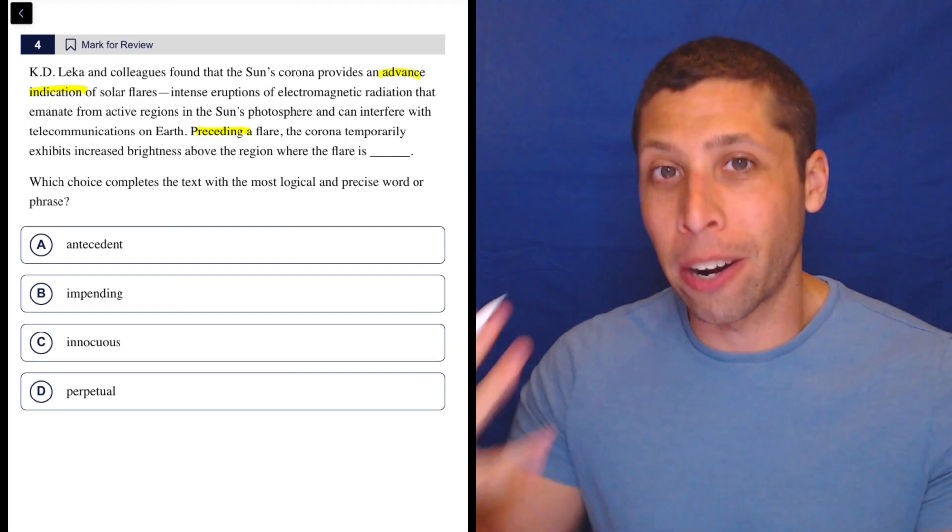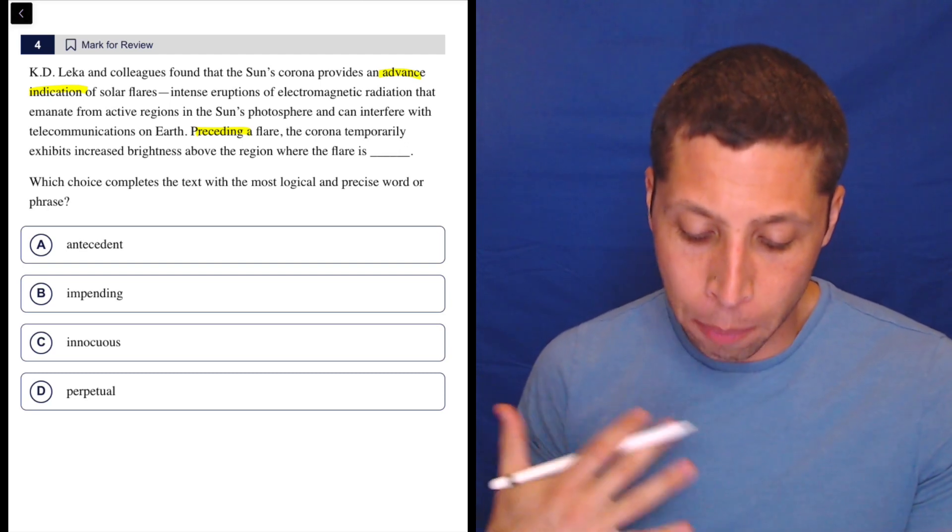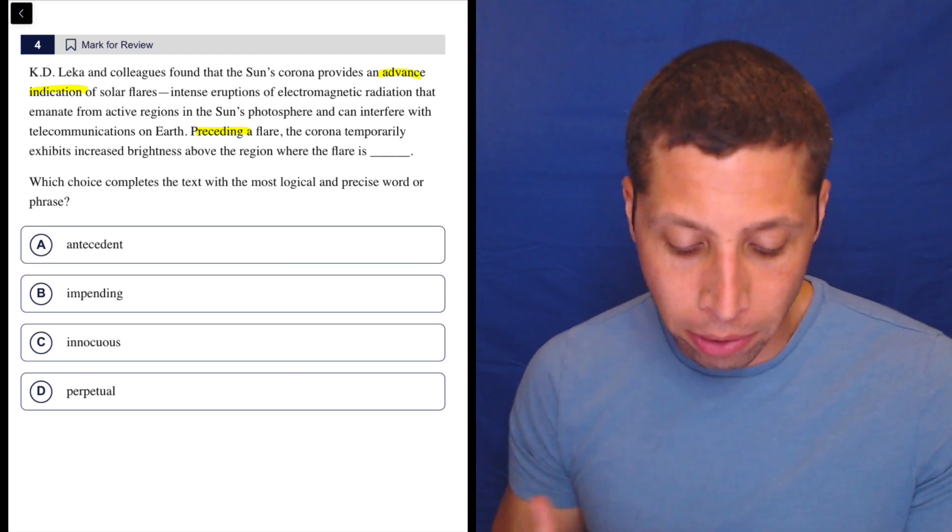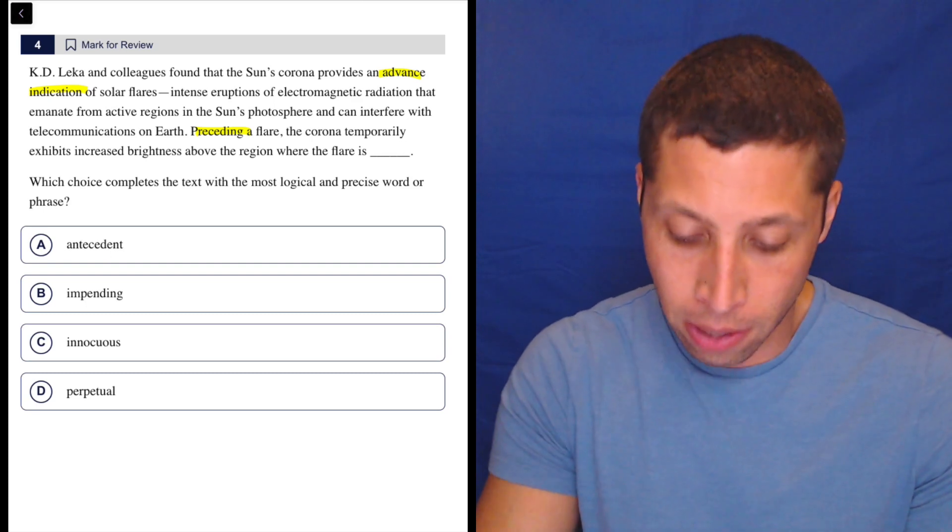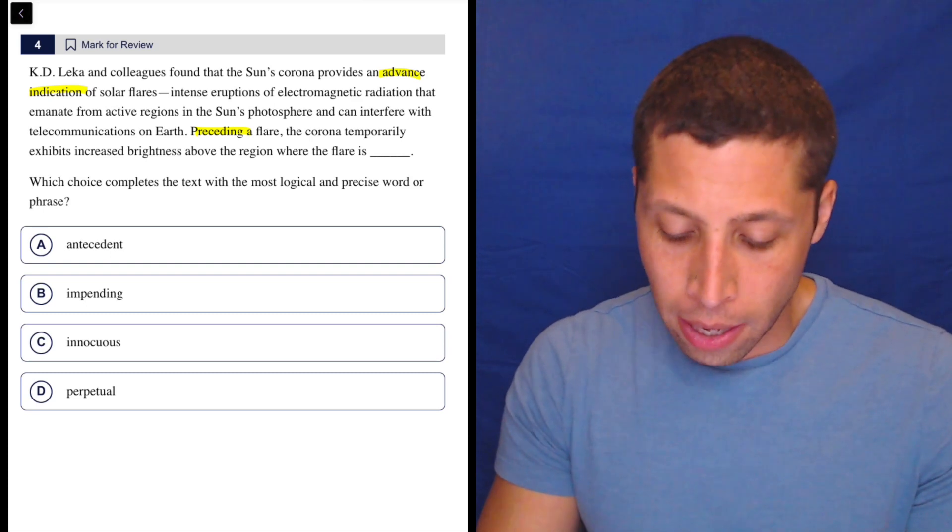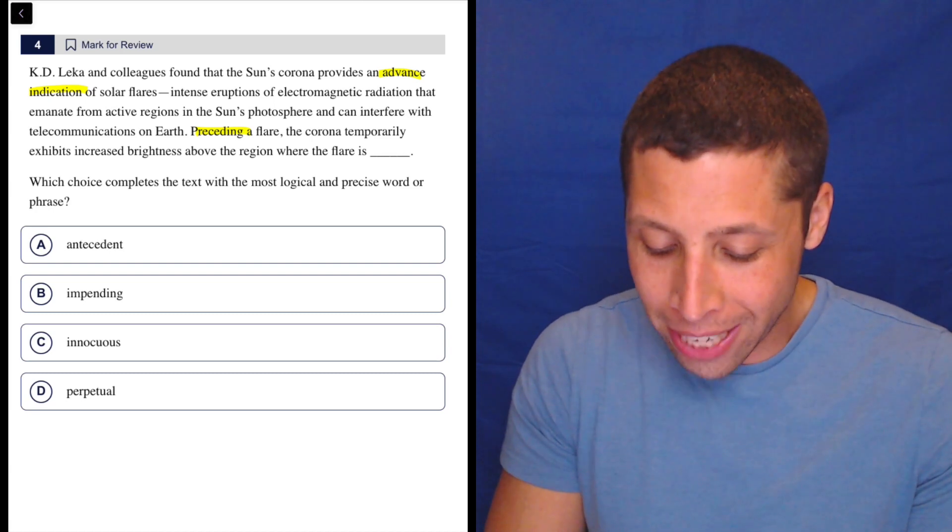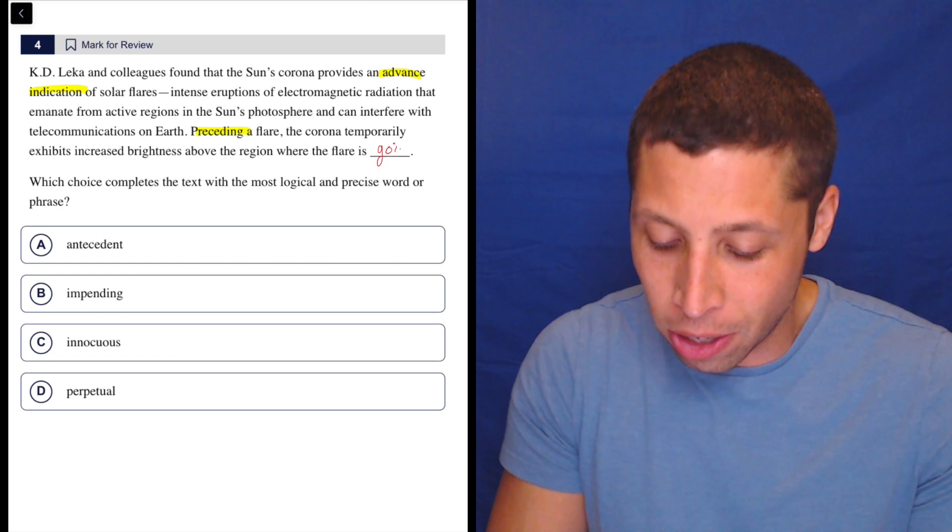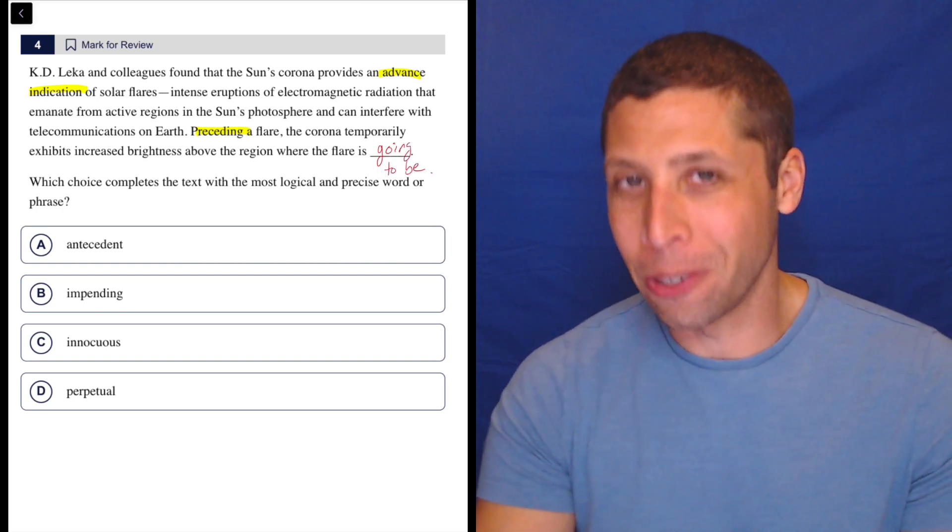Now notice preceding a flare, we're talking about things happening in a certain time sequence. Preceding a flare, the corona temporarily exhibits increased brightness above the region where the flare is. So my kind of dumb way to enter something in the blank here would be like where the flare is going to be, right? Like that's probably what you would say.